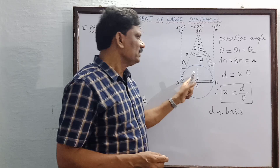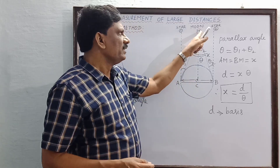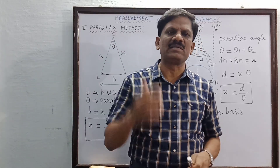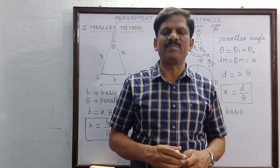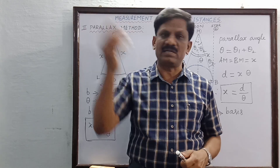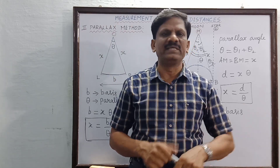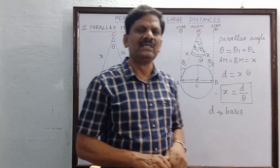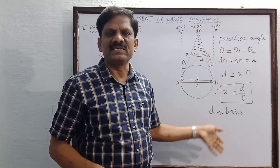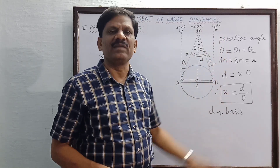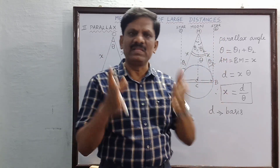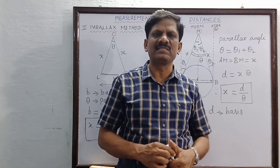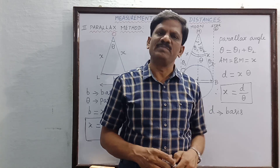Not only the distance of the moon, we can also determine the distance of the nearest planet Mars from the surface of the earth. Like this, any distant object's distance can be found from the surface of the earth. Such a method is called the parallax method.